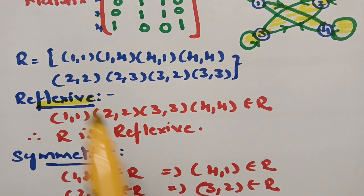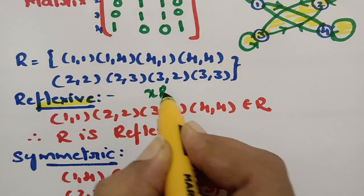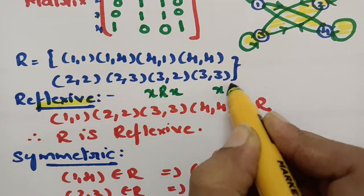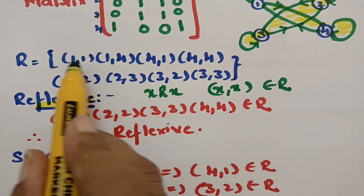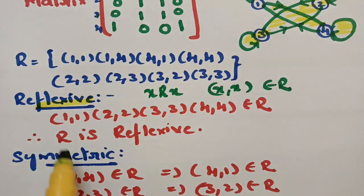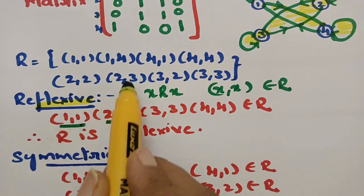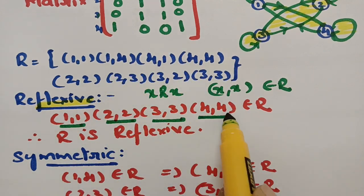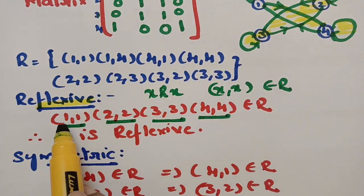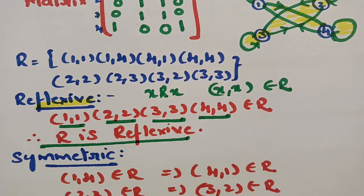Coming to the reflexive property: reflexive means x should relate with x, i.e., (x, x) belongs to R. If you take 1 from this set, (1,1) is present. Then (2,2), (3,3), and (4,4) are also present. So the self-images, that is (x, x), lie in the relation R. Therefore, R is reflexive.